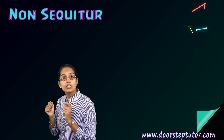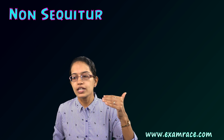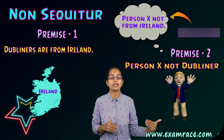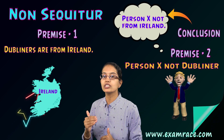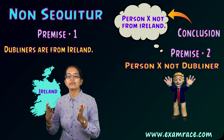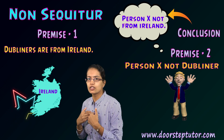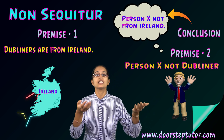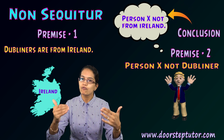The next is non-sequitur. Non-sequitur is a fallacy where conclusions are not drawn from the propositions. For example: all Dubliners are from Ireland; person X is not a Dubliner; therefore person X is not from Ireland. How do I relate that conclusion to the given statements? My proposition says all Dubliners are from Ireland — I do not know about people who are not Dubliners. So about people who are not Dubliners, I cannot state anything. Therefore my conclusion is not derived from the proposition. There is a logical error that exists here, and therefore this is again a part of the formal fallacy.